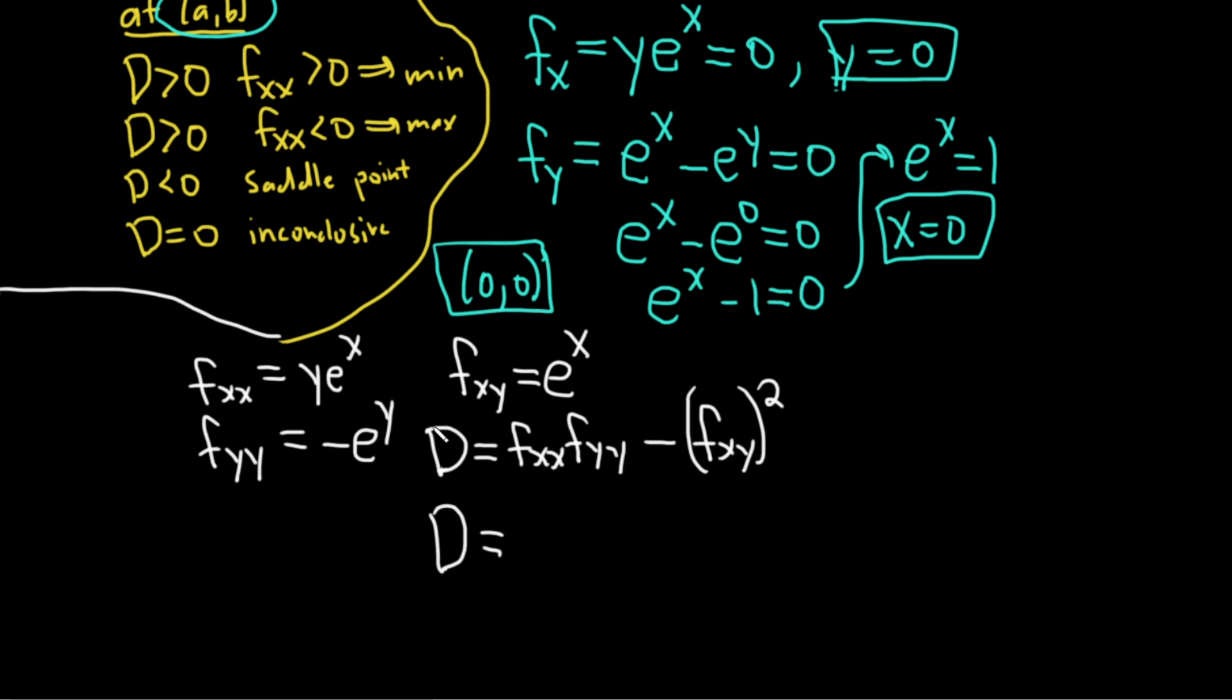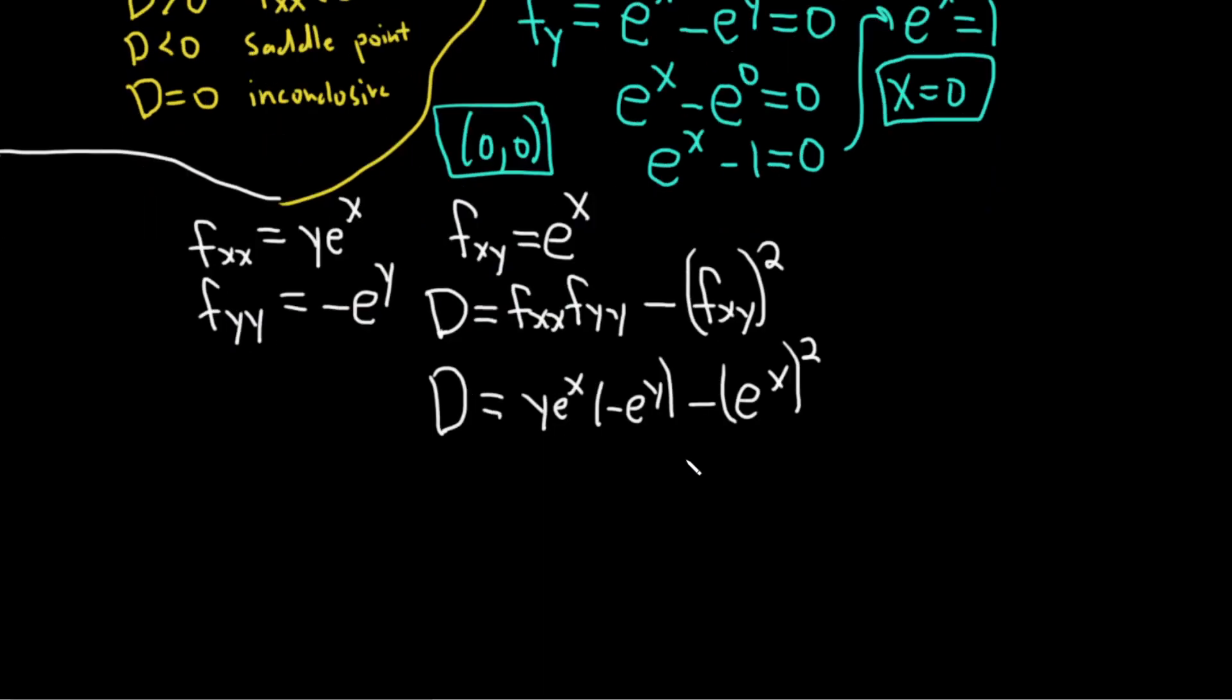So big D is equal to, fxx is ye^x, fyy is negative e^y, minus fxy is e^x, and that's squared. So big D is equal to, putting the negative in the front, negative ye^x times e^y minus e^(2x).